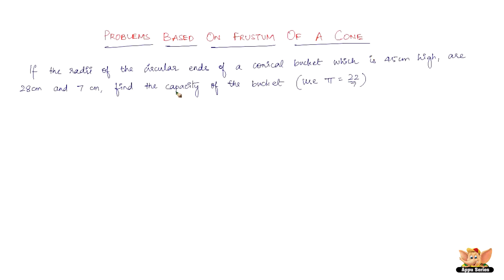The capacity of the bucket means the volume of the bucket. You've got the height of this frustum. This is definitely a frustum. If the radii of the circular ends of a conical bucket are 28 cm and 7 cm, it's definitely a frustum — a frustum of a cone.